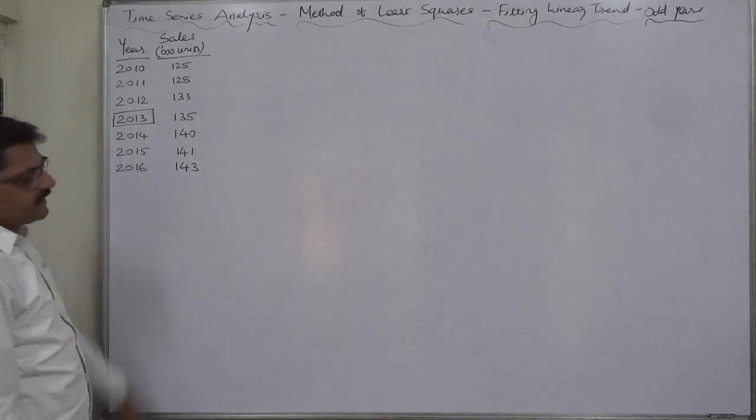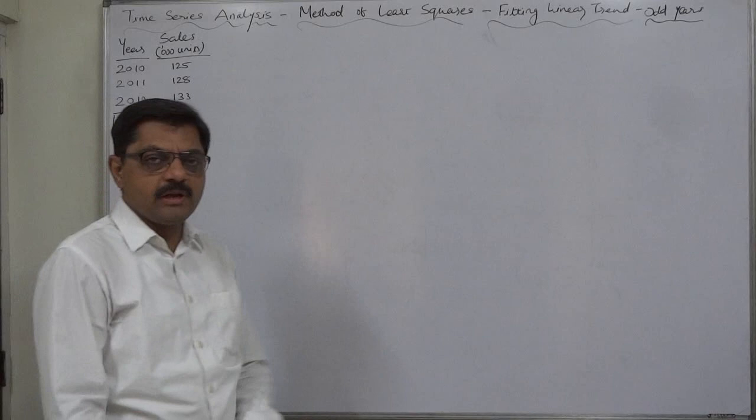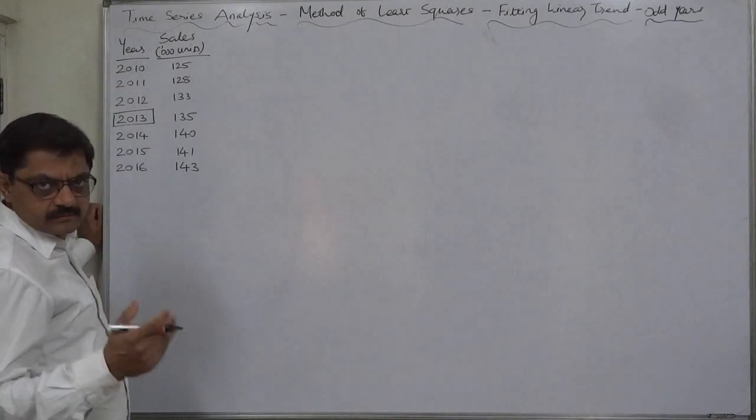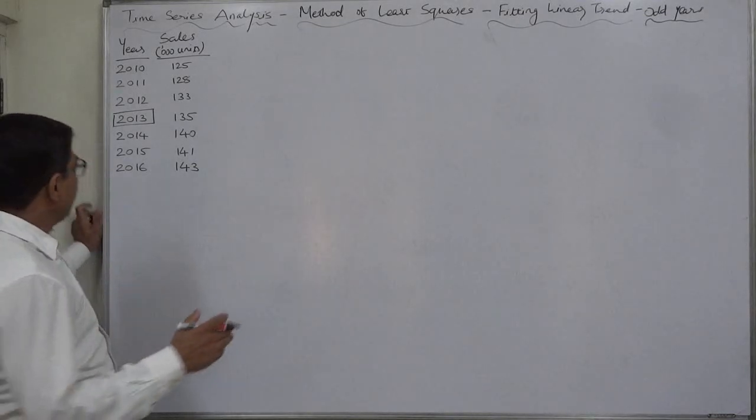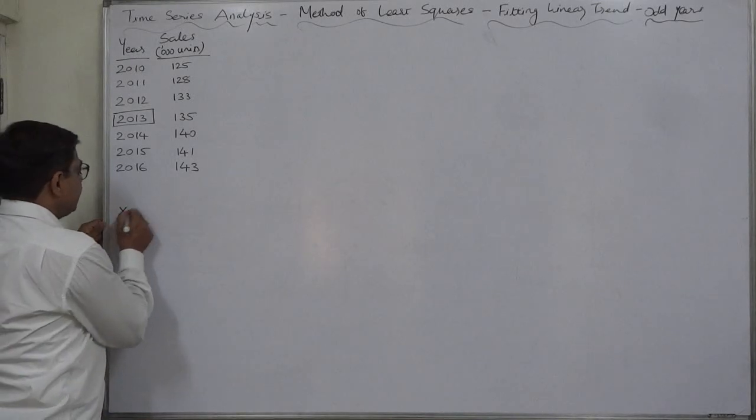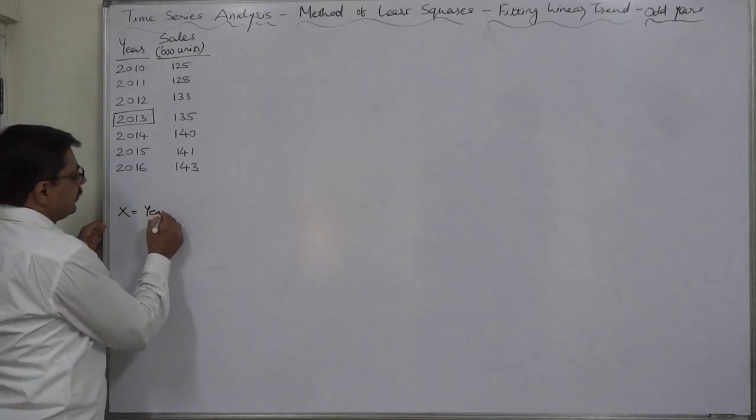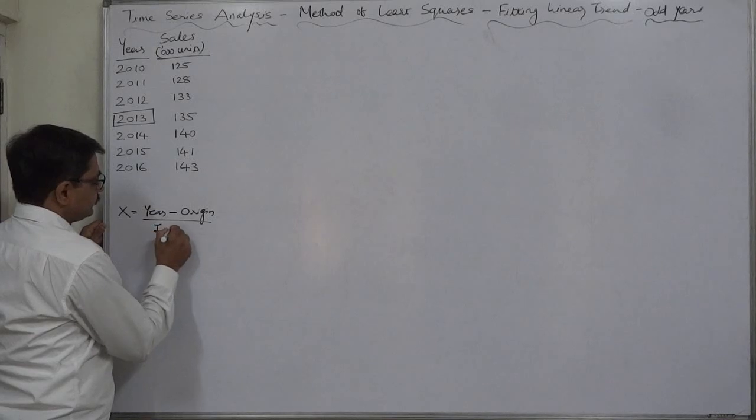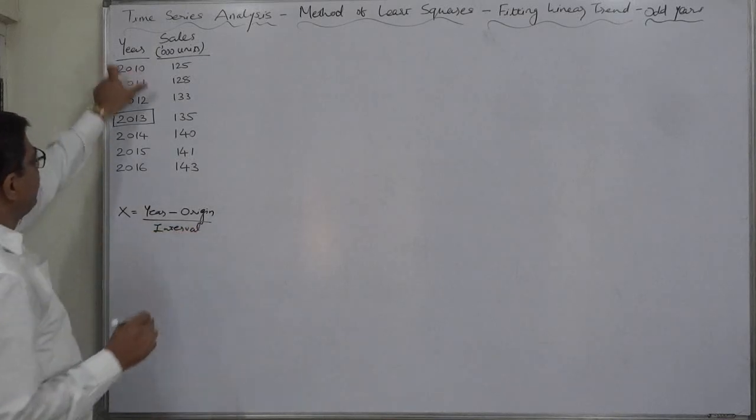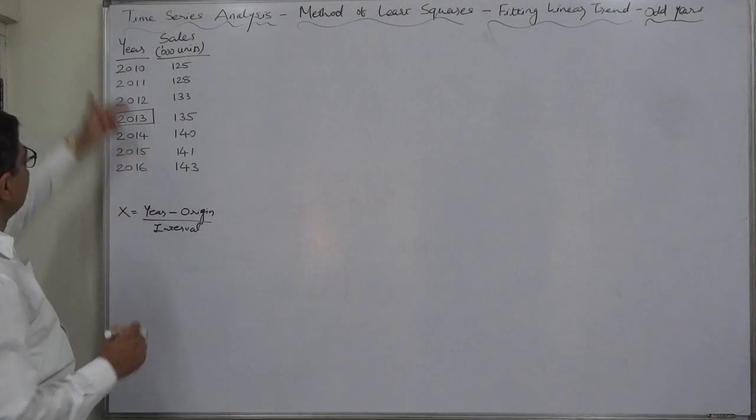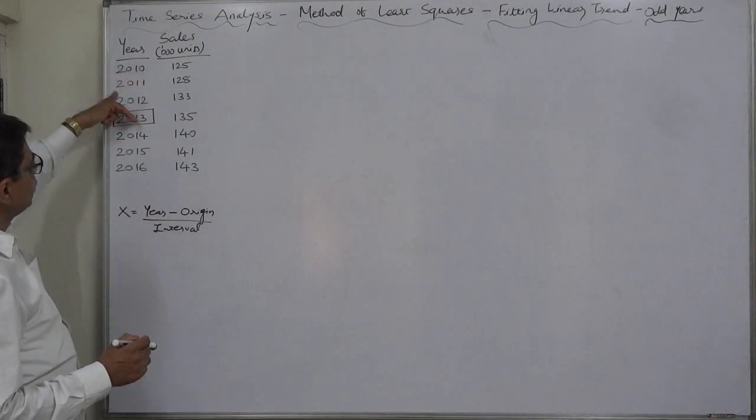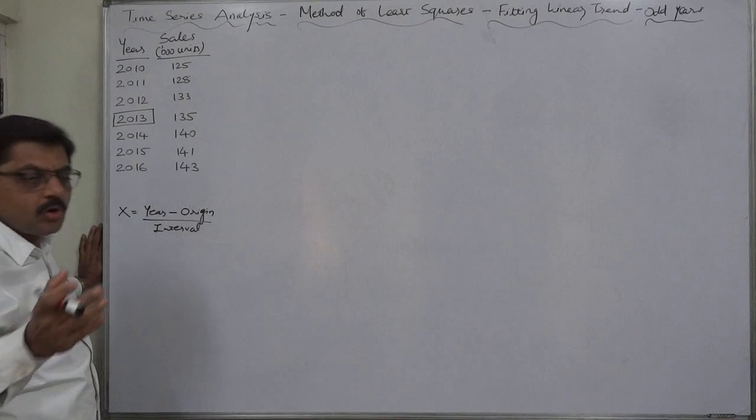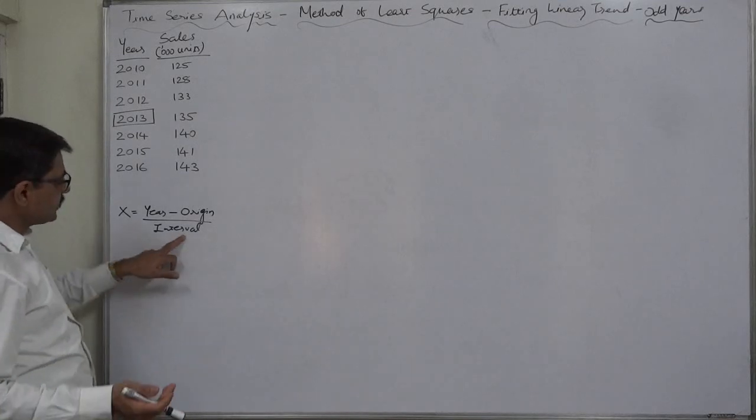Let's learn it. As we know these are odd number of years. First of all select the middle year as origin. This will be the origin. Now let's say create variable X, independent variable based on these time series. X is year or period minus origin divided by interval. Interval means gap between two periods or two years. In this case it is one. After 2010 it is 2011, then 12, 13, 14, 15, 16, so gap of one only.